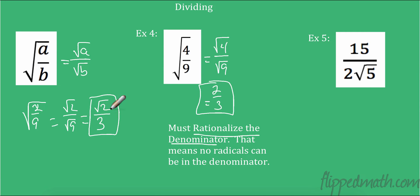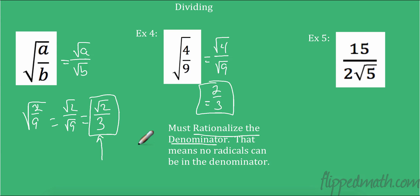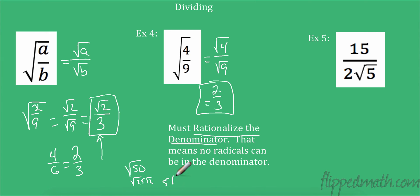When I broke up the previous example, I had a radical in the numerator but not the denominator — that's okay. This rule goes back to before calculators. It's easier to approximate a number when the radical is in the numerator rather than the denominator, because dividing by a square root without a calculator is very difficult. Just like we always simplify fractions, and simplify the square root of 50 to 5 radical 2, we must rationalize the denominator.